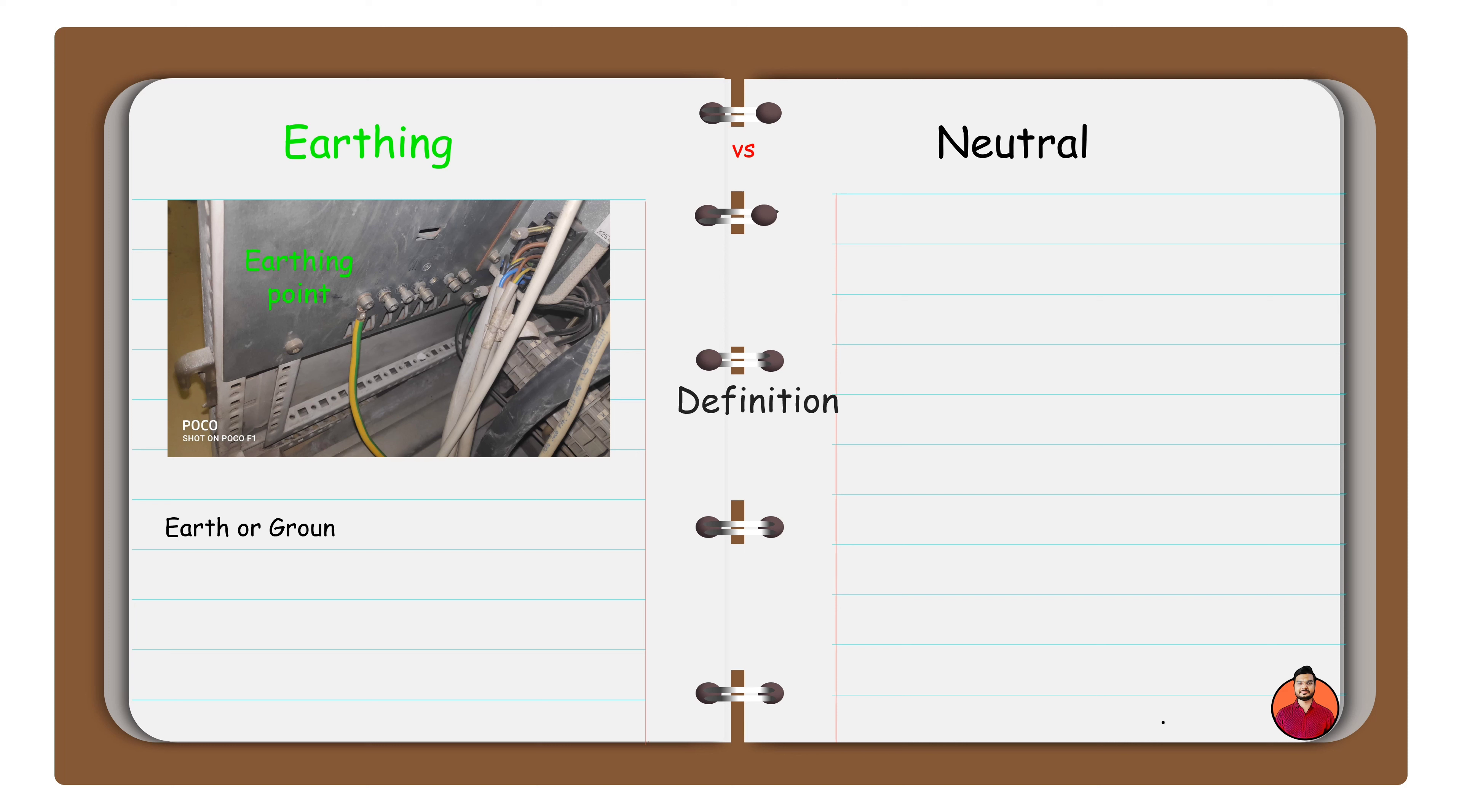Earth or ground is used for safety concerns against leakage or residual currents on the system via least resistance path.